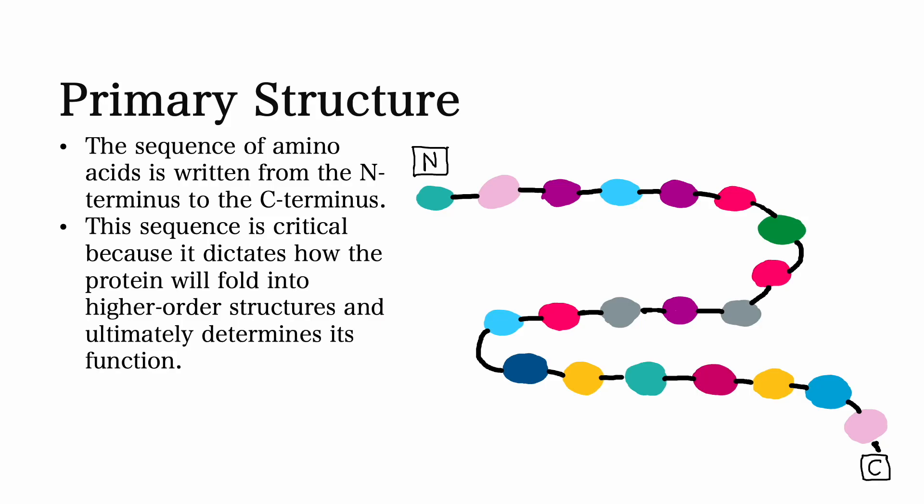The sequence of amino acids is written from the N terminus to the C terminus. This sequence is critical because it dictates how the protein will fold into higher order structures and ultimately determine function.